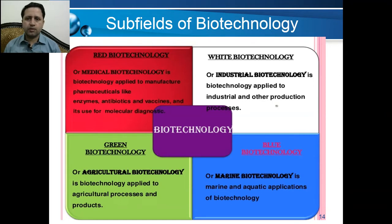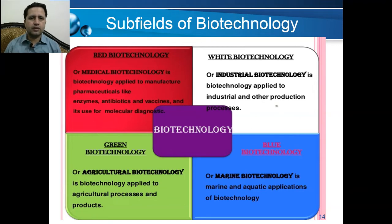Red biotechnology is applied to the manufacture of pharmaceuticals like enzymes, antibiotics, and vaccines, and it is used for molecular diagnostics. White biotechnology is also called industrial biotechnology — it is also called gray biotechnology — and it is applied to industrial and production processes which happen at industrial scale.